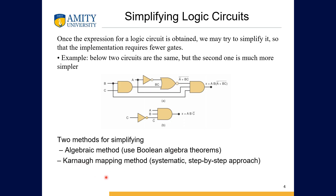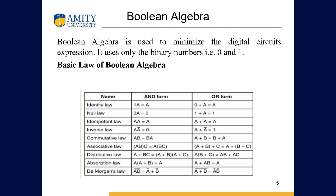In Boolean algebra there are many identities. The most important one is De Morgan's Law — you need to know De Morgan's Law for solving further questions, it helps a lot. Other than De Morgan's, the distributive law is also important. These two laws need to be learned.